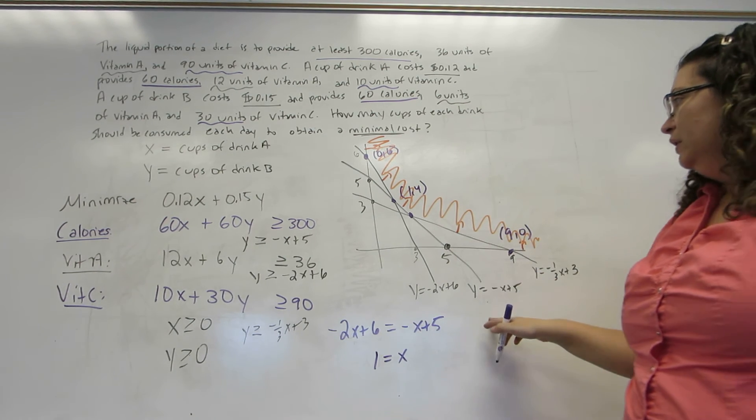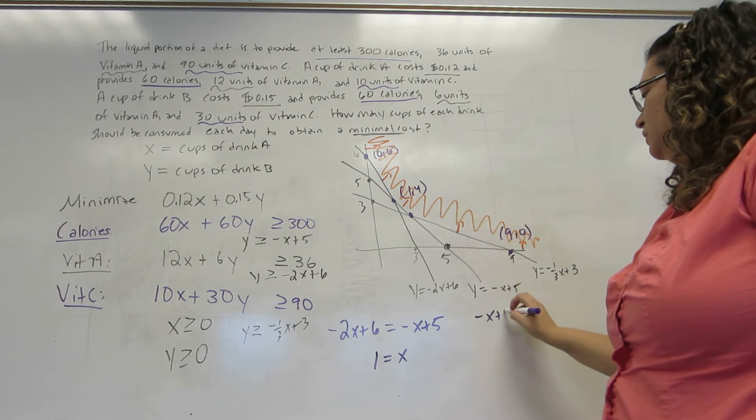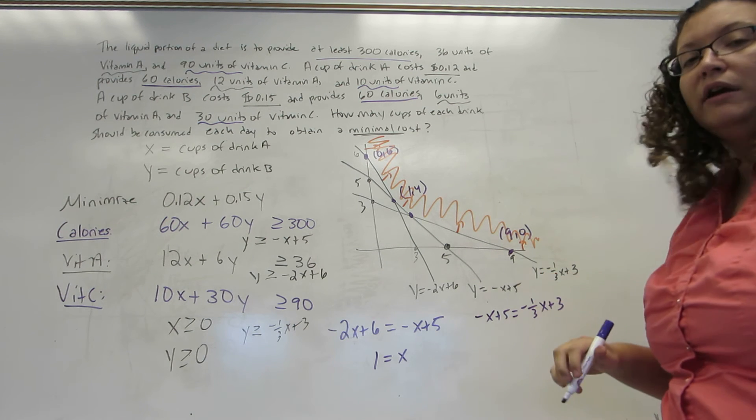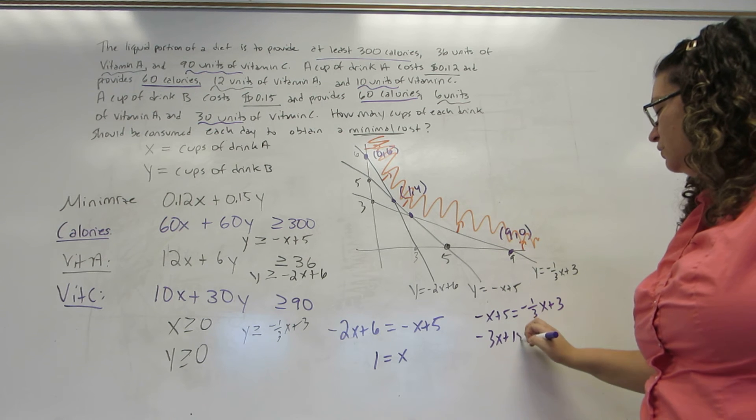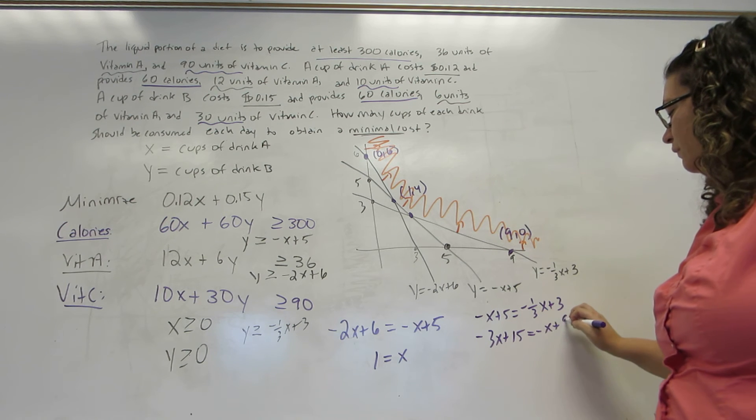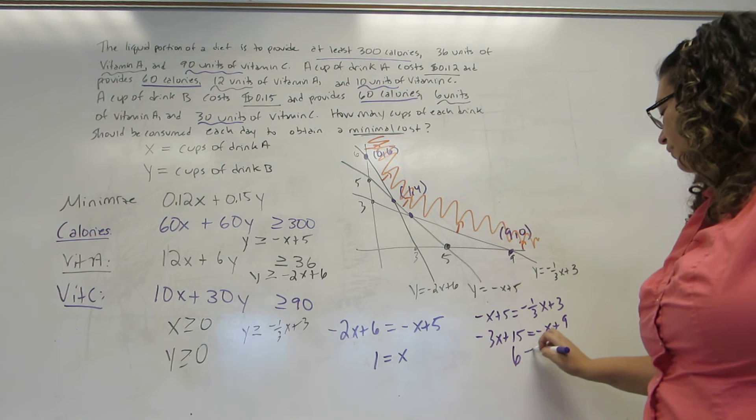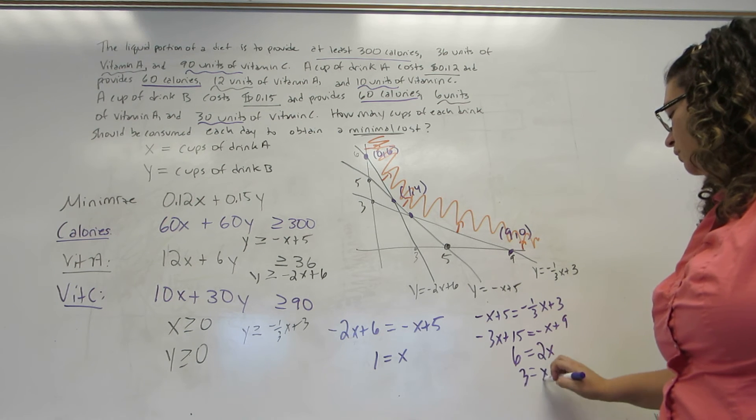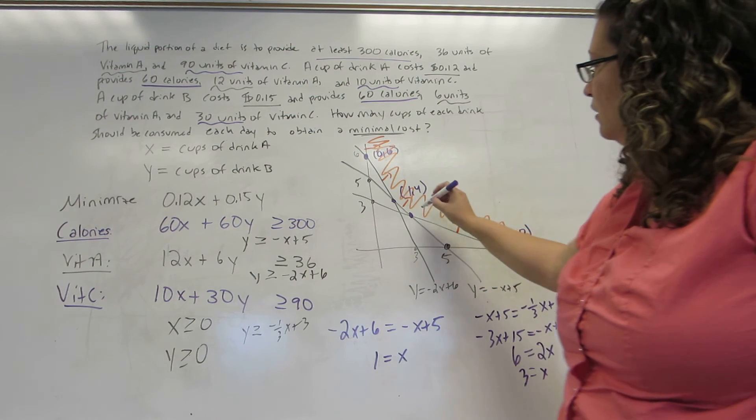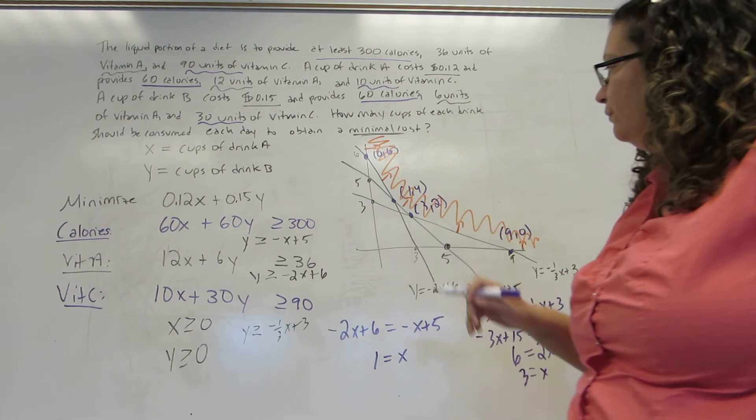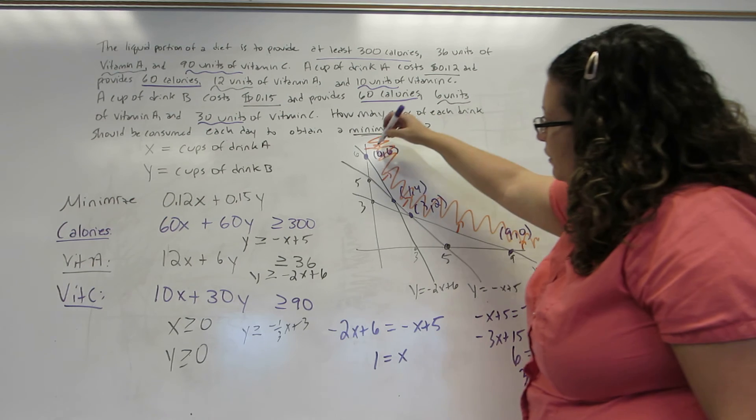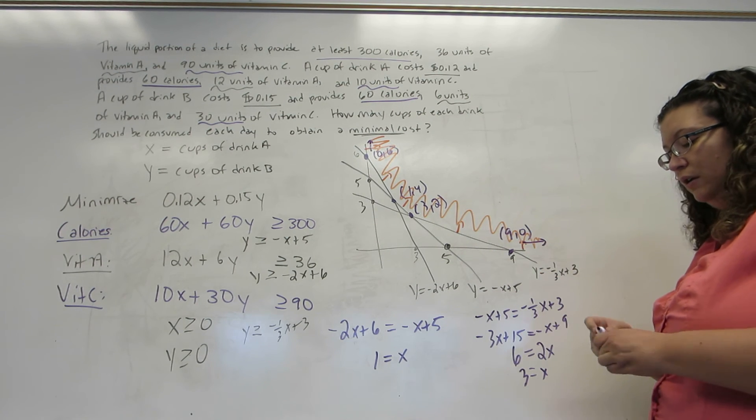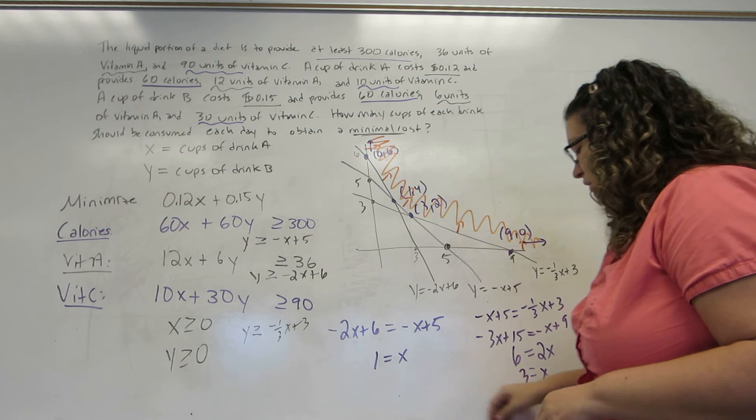For my second one, that is where minus X plus 5 intersects the line minus one-third X plus 3. Once again, clearing fractions to make the problem easier to solve, I end up with X equals 3. If X is 3, then Y is 2. Now I'm also, of course, going to need points that extend along the boundary to represent the fact that it is unbounded.